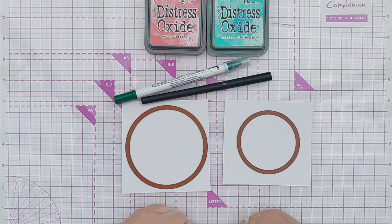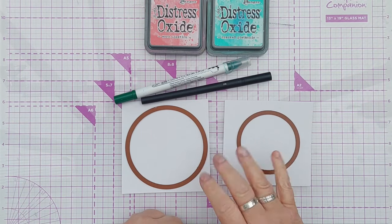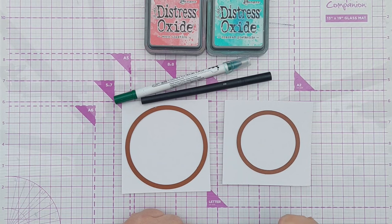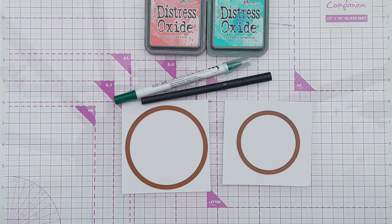Today we are going to make a watermelon using our circle dies, a couple of distress oxides, a green marker and a black marker, and then we're going to stick it on a card with a splash of sunshine behind it.